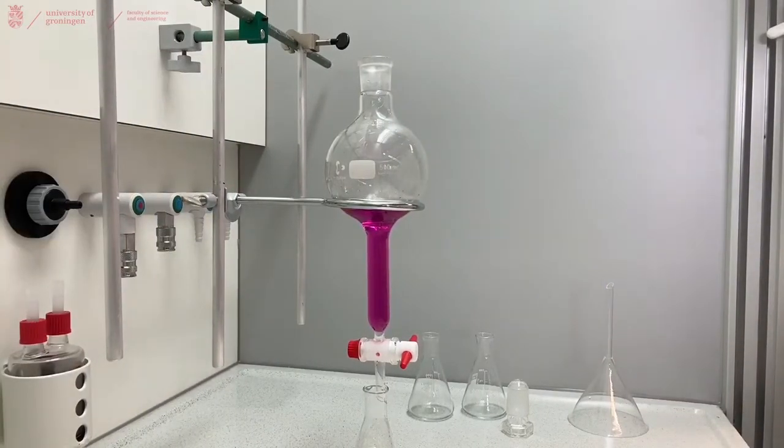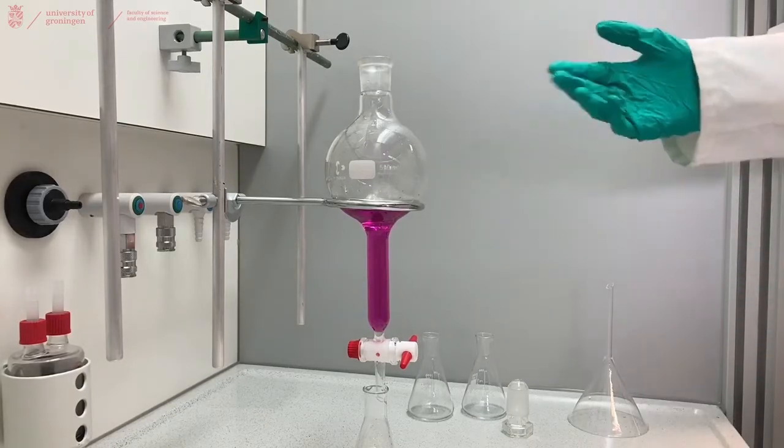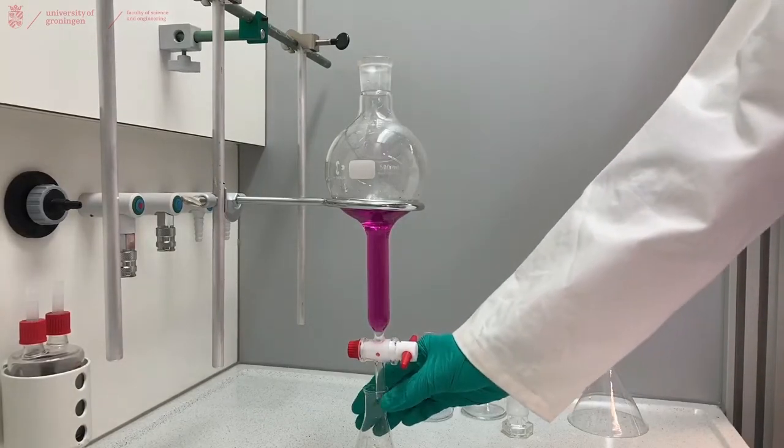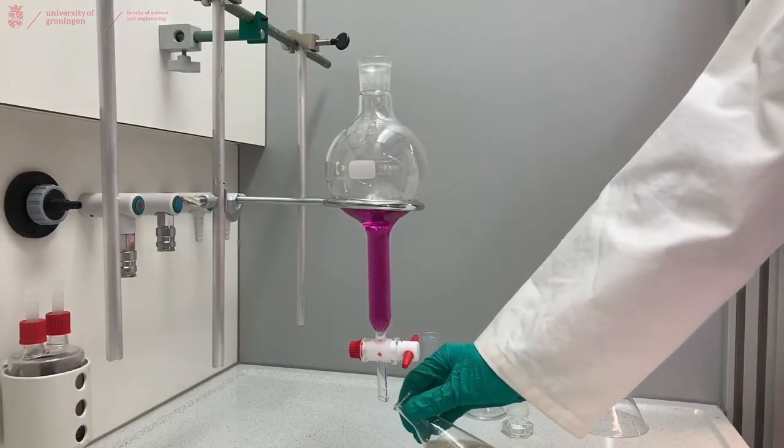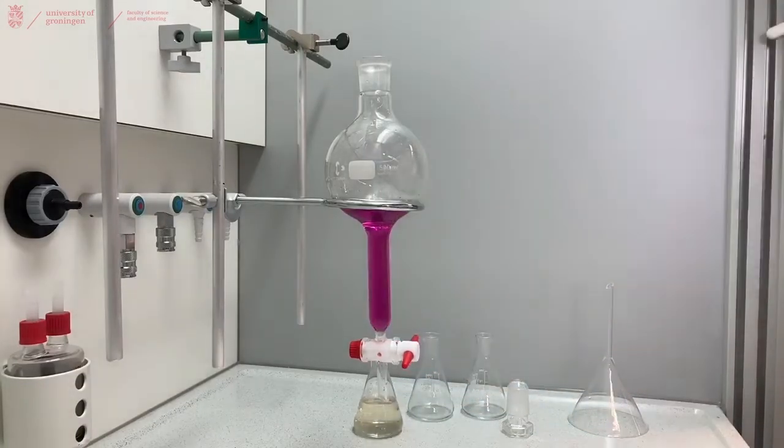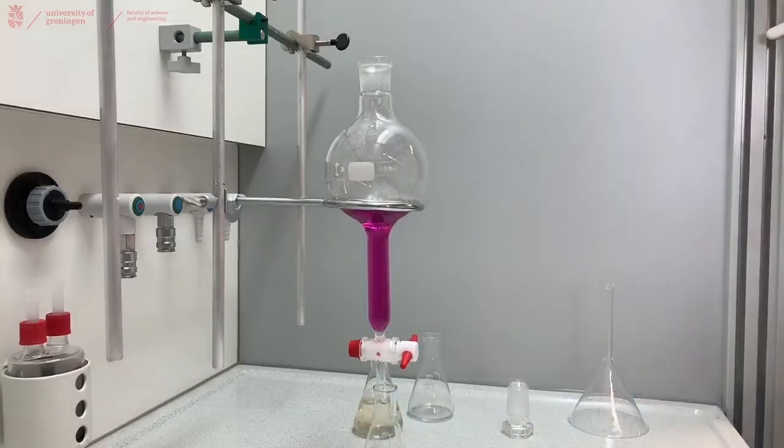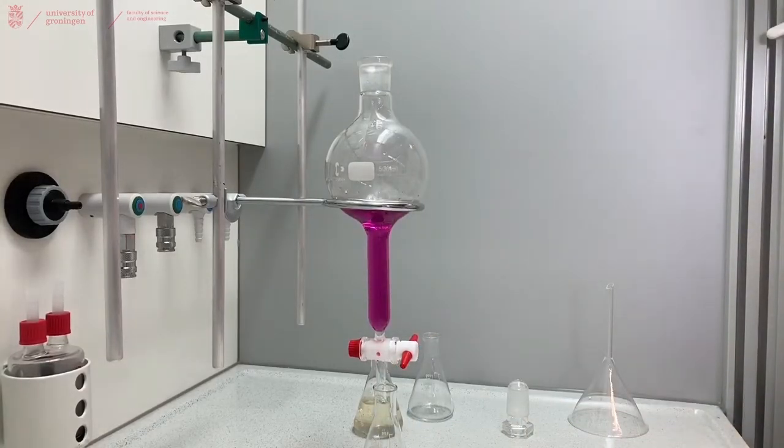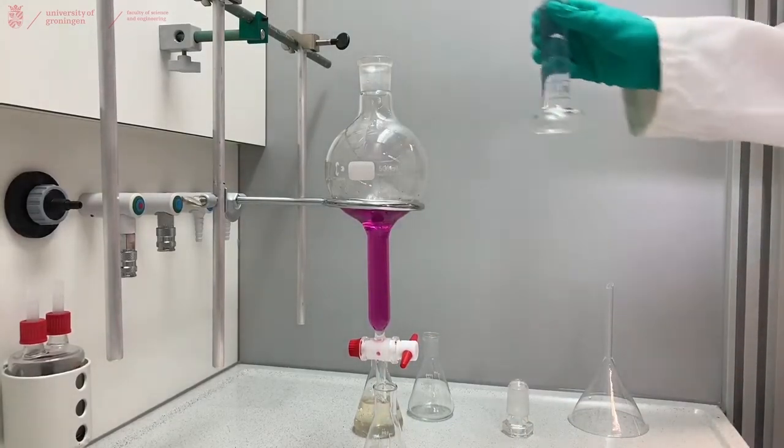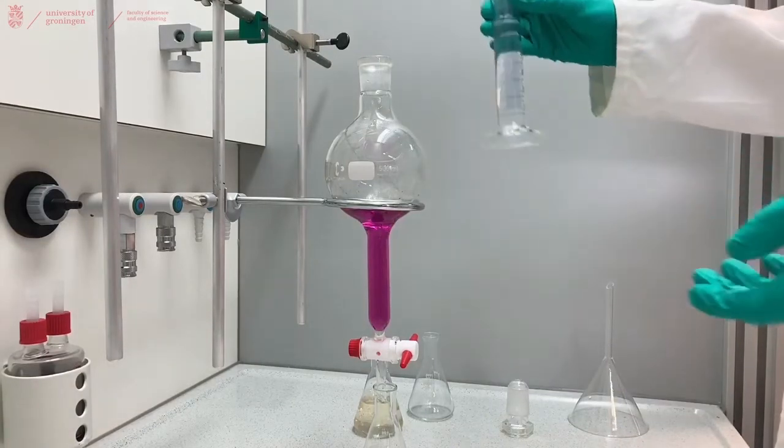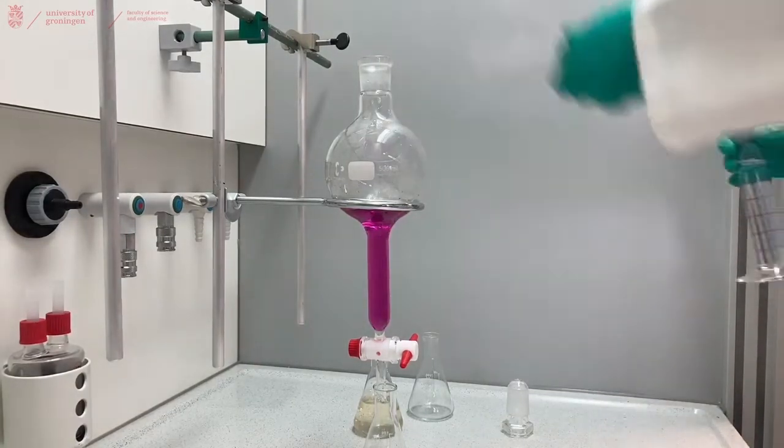When you have a colored and a discolored layer, it's very easy to see the separation. To demonstrate a separation between two colorless layers, we will neutralize the iodine by using sodium bisulfite. The sodium bisulfite is in a saturated solution in water and we will now add it to our separation funnel.